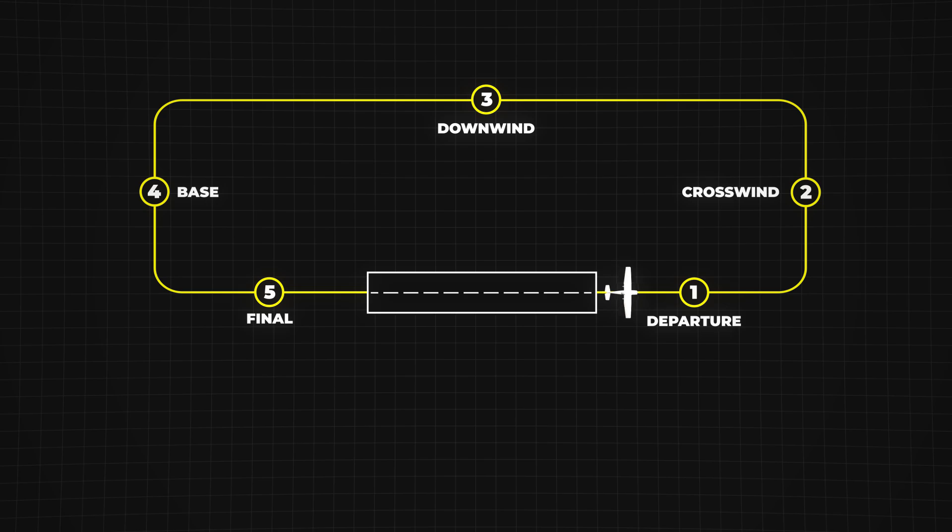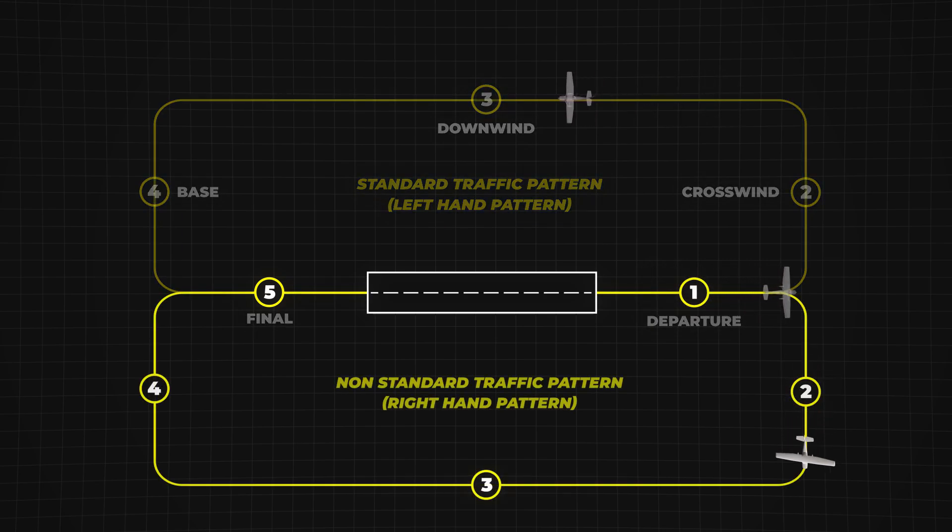Most airports use a standard left-hand pattern, meaning that all turns in the pattern are made to the left. However, some runways may have a right-hand pattern, where all turns are made to the right.